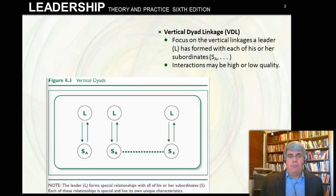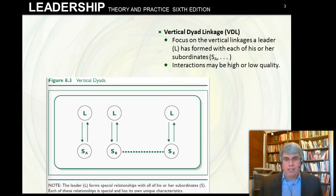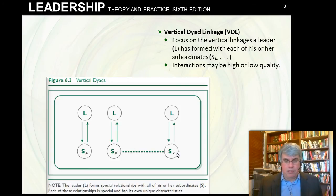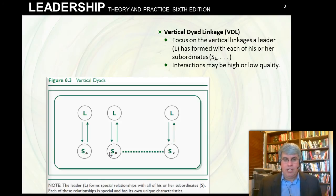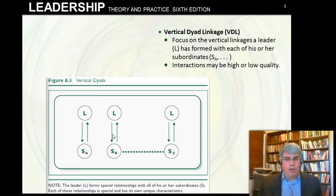In its simplest form, LMX looks at what they call vertical dyads and the linkage between them. In a diagram, L is the leader — there's only one leader — but as the leader goes from subordinate A to subordinate B and so on, there are exchanges. Between each subordinate there's a set of interactions that define the relationship, or the vertical dyad linkage. These interactions may be high quality or low quality — good, or suboptimal.